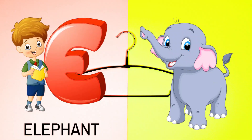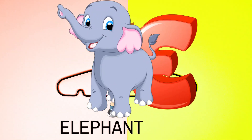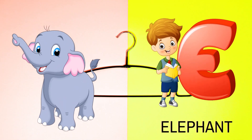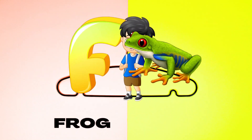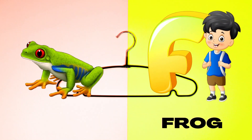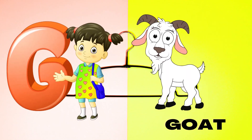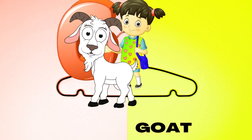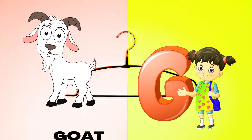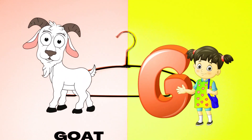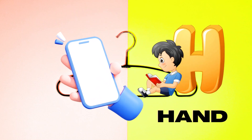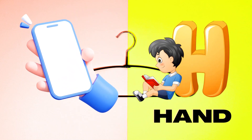E is for Elephant, E-E-Elephant. F is for Frog, F-F-Frog. G is for Goat, G-G-Goat. H is for Hand, H-H-Hand.